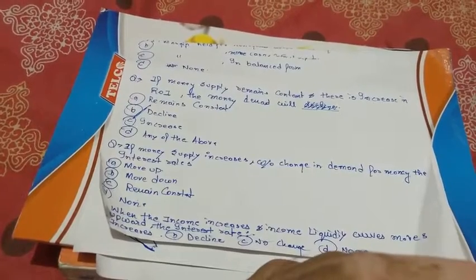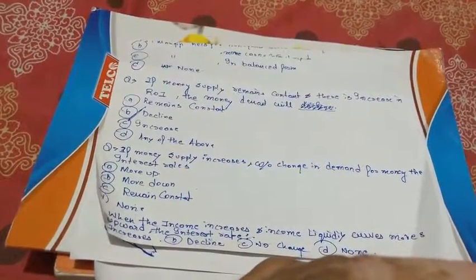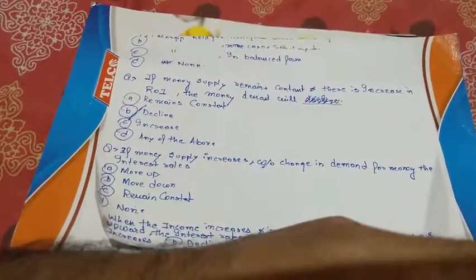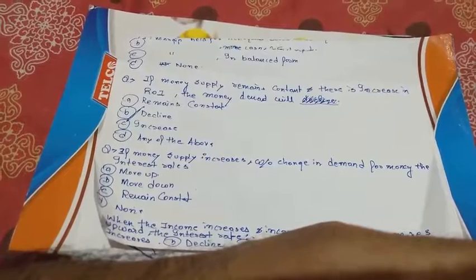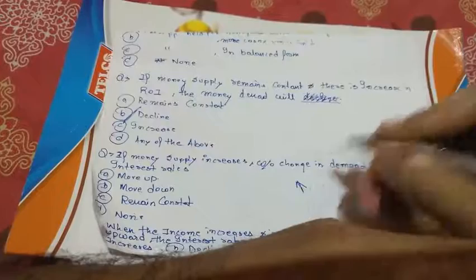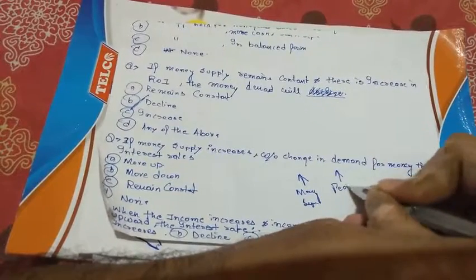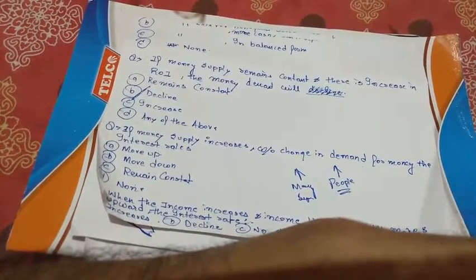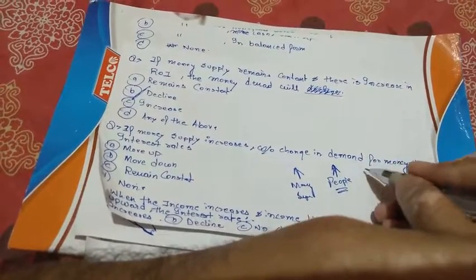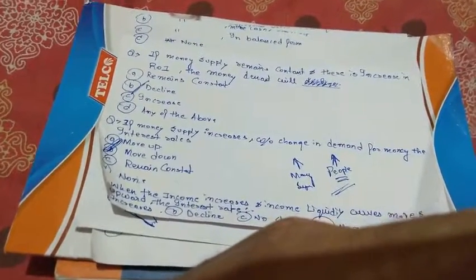Next question: if money supply increases without changing the demand for money, the interest rates... For example, if the RBI injects a large amount of money into the market, people have more money with them, so there is less demand for credit. If there is less demand for credit, banks will decrease the rate. Therefore, the interest rate will move down — option B.